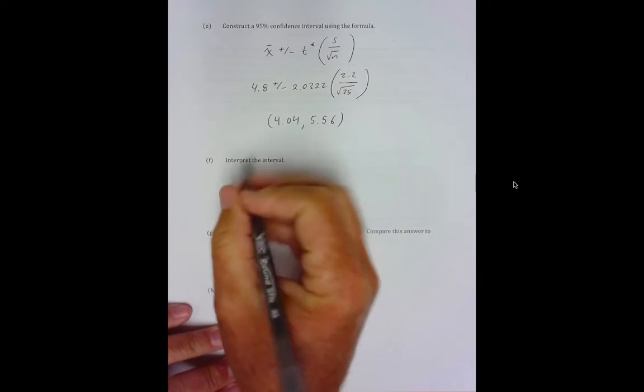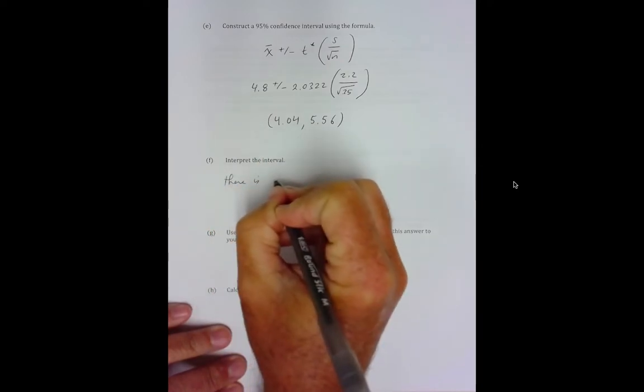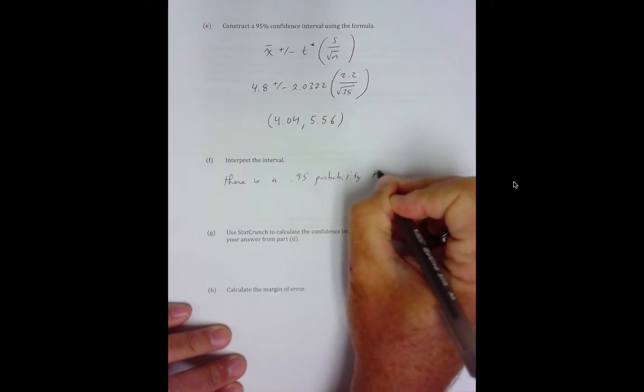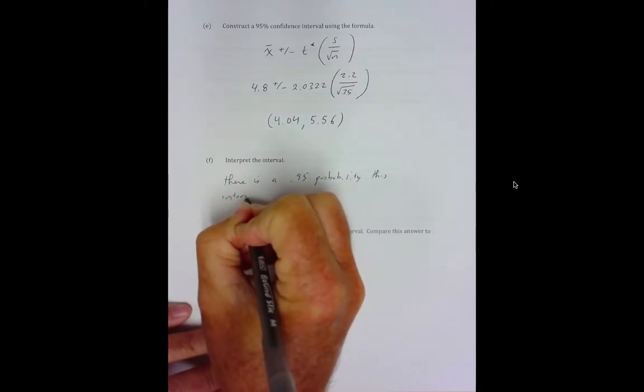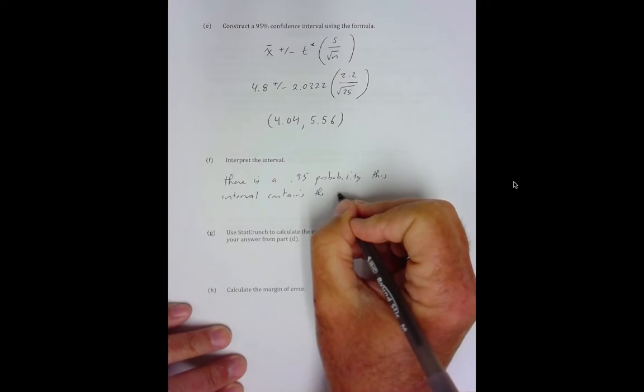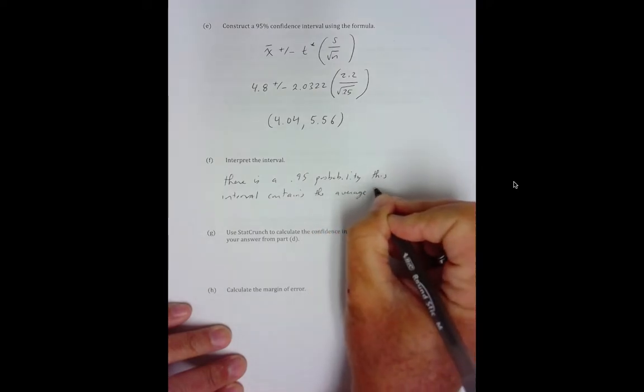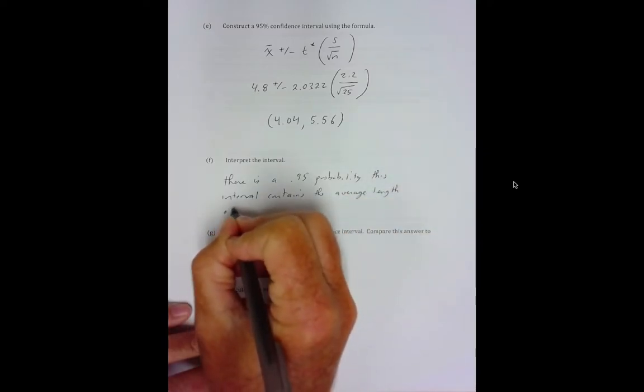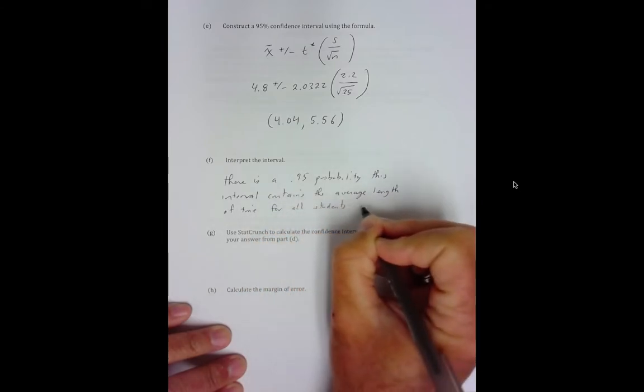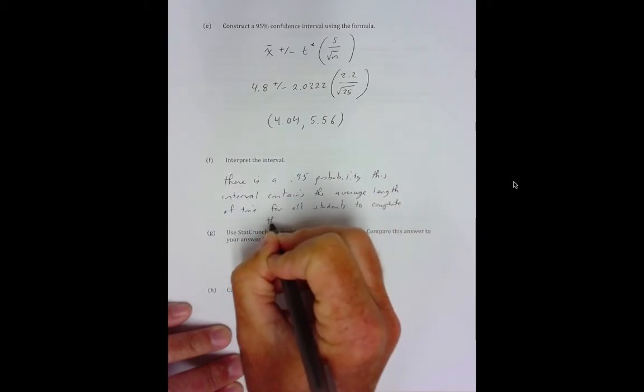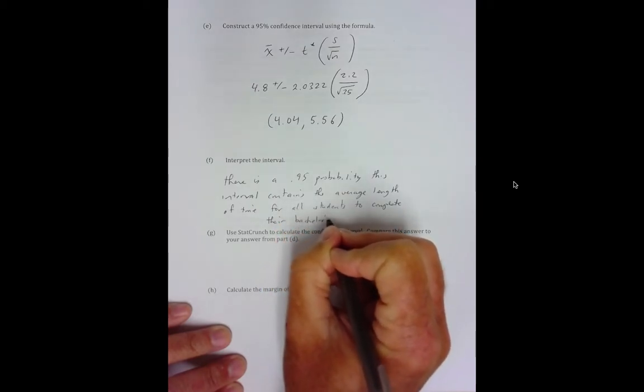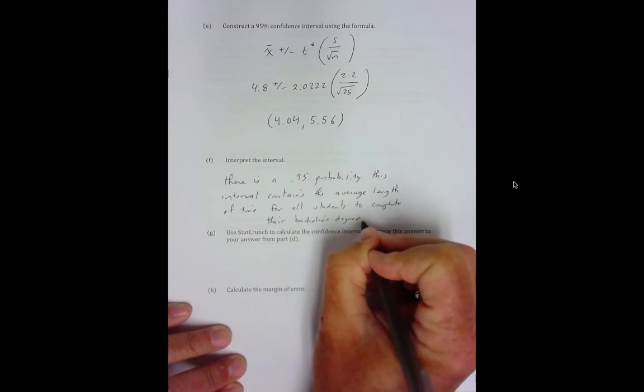Interpret the interval. There is a 0.95 probability this interval contains the average length of time for all students to complete their bachelor's degree.